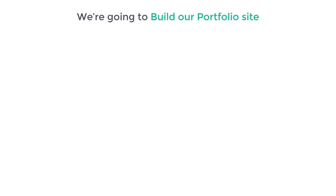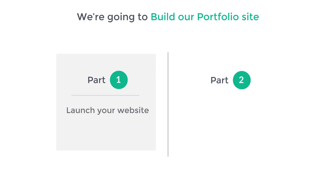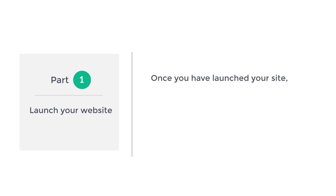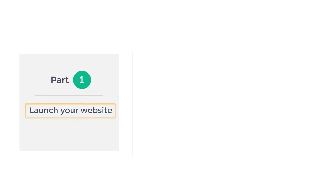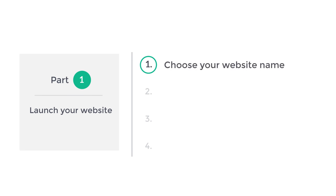We are going to build our portfolio site in just two parts. The first part is to launch your website. Once you have launched your site, your portfolio website will be live on the internet and you can share your site with anyone. So to launch your WordPress site, we are going to do 4 steps. The first step is to choose your website name.